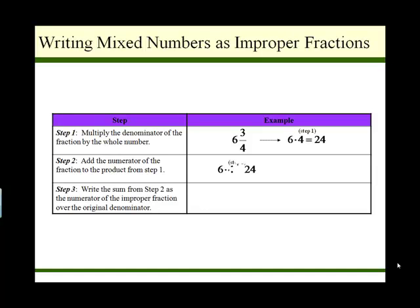The next step is we take that number, and then we add the numerator to it. So the numerator in our mixed number was 3, and we have 24 plus 3 is 27. And finally, our last step is to put that numerator 27 on top of our same original denominator, which is 4. And this is how we would write a mixed number as an improper fraction.